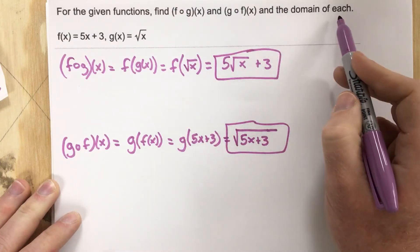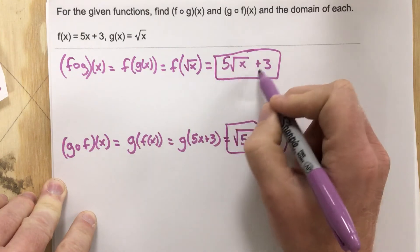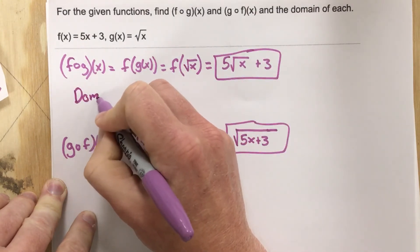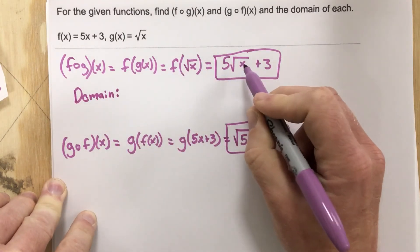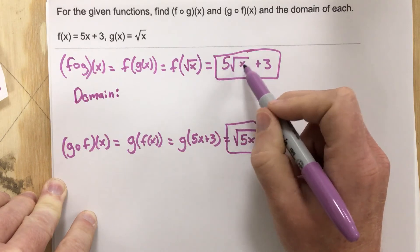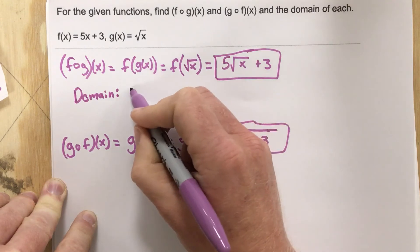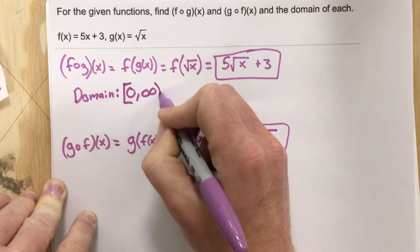Now they want us to find the domain of each. The domain is determined by what you can plug into the radical. The smallest number I can plug into any radical is 0, because I can't plug in negative numbers. So 0 to infinity is the domain for the top function.